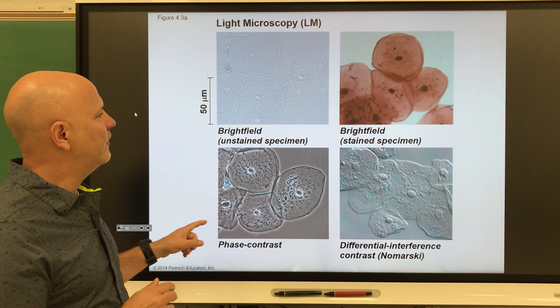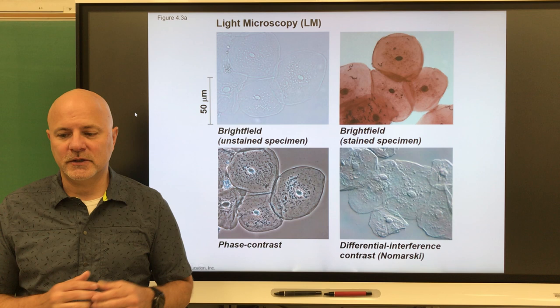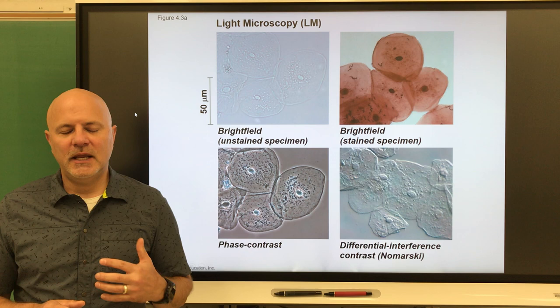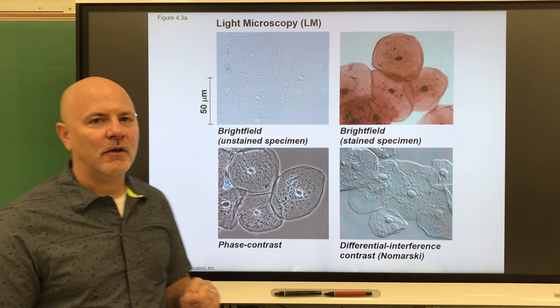About 150 years later from van Leeuwenhoek, we come to Robert Brown — a Scottish guy in the 1830s. He was the first to discover the nucleus. When you look at these cells, you can see the nucleus in all of them.